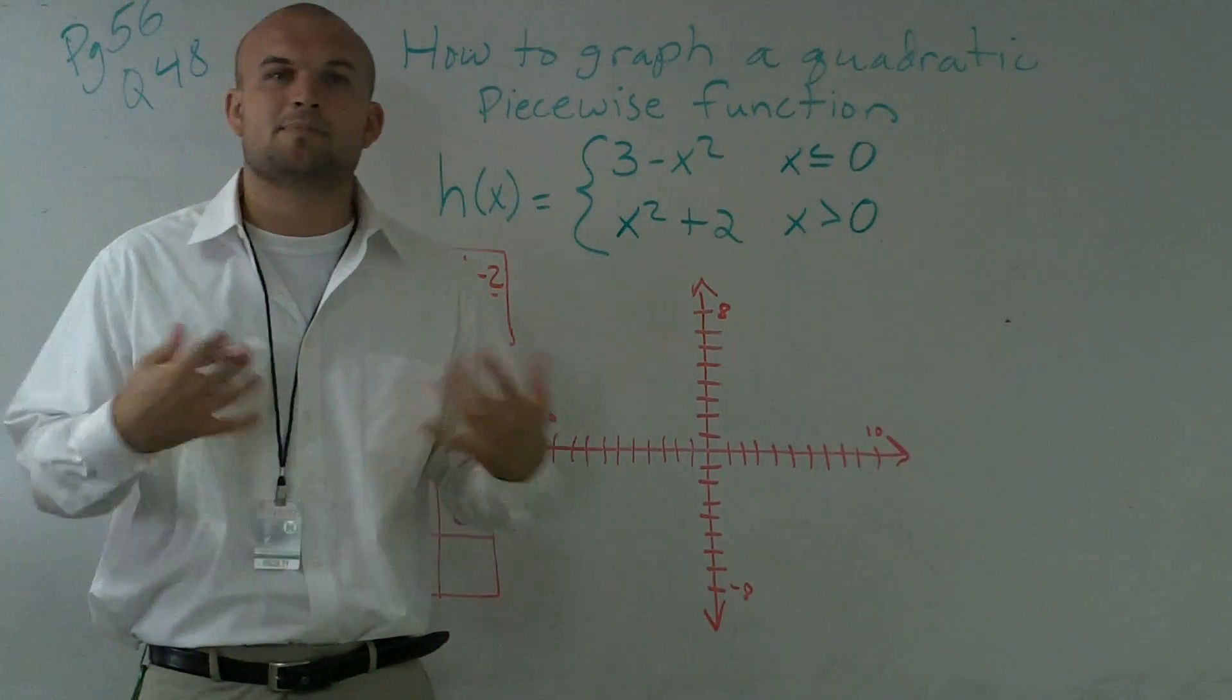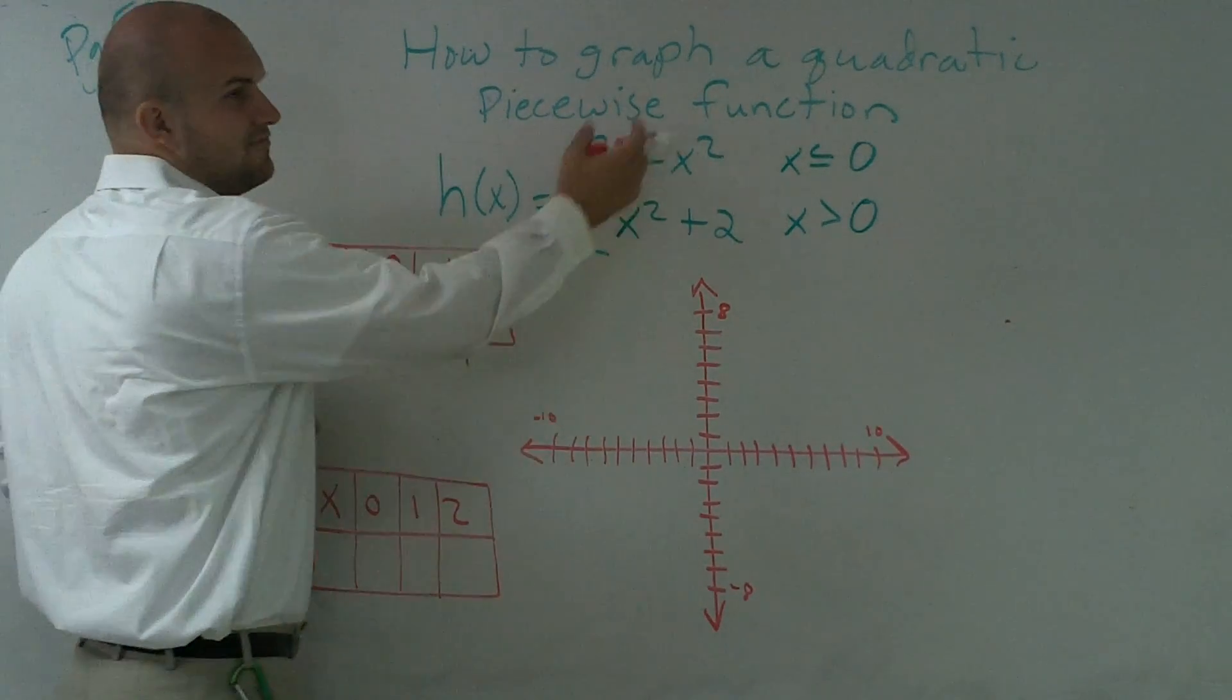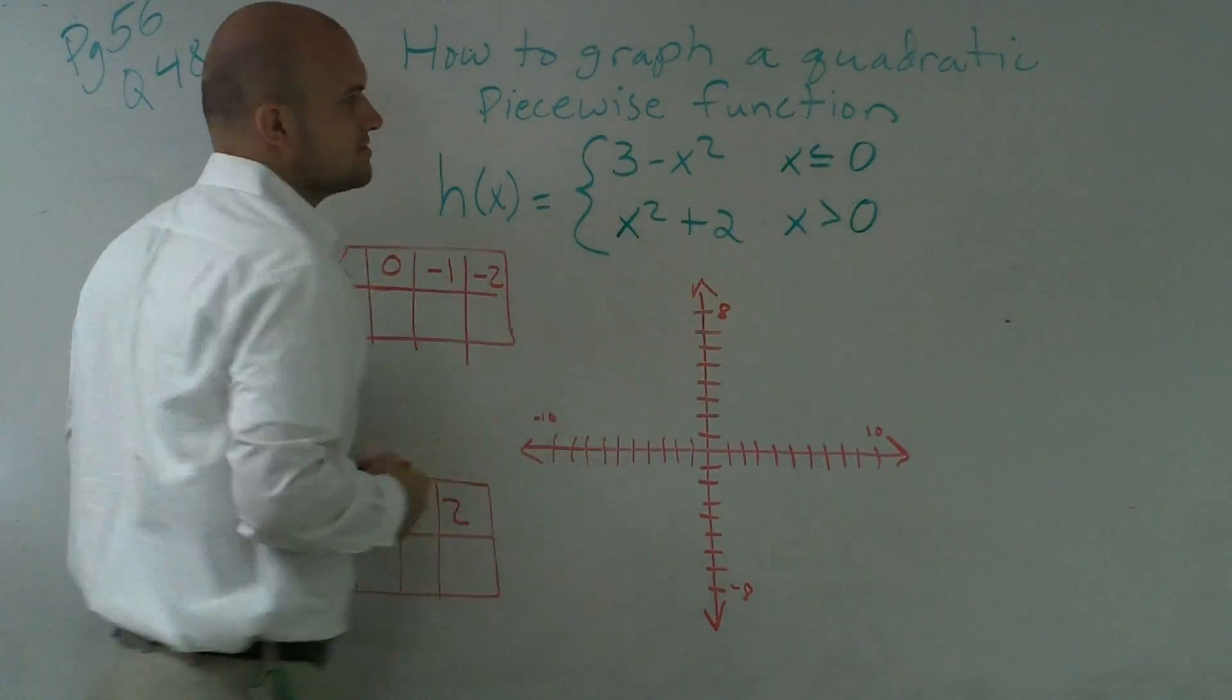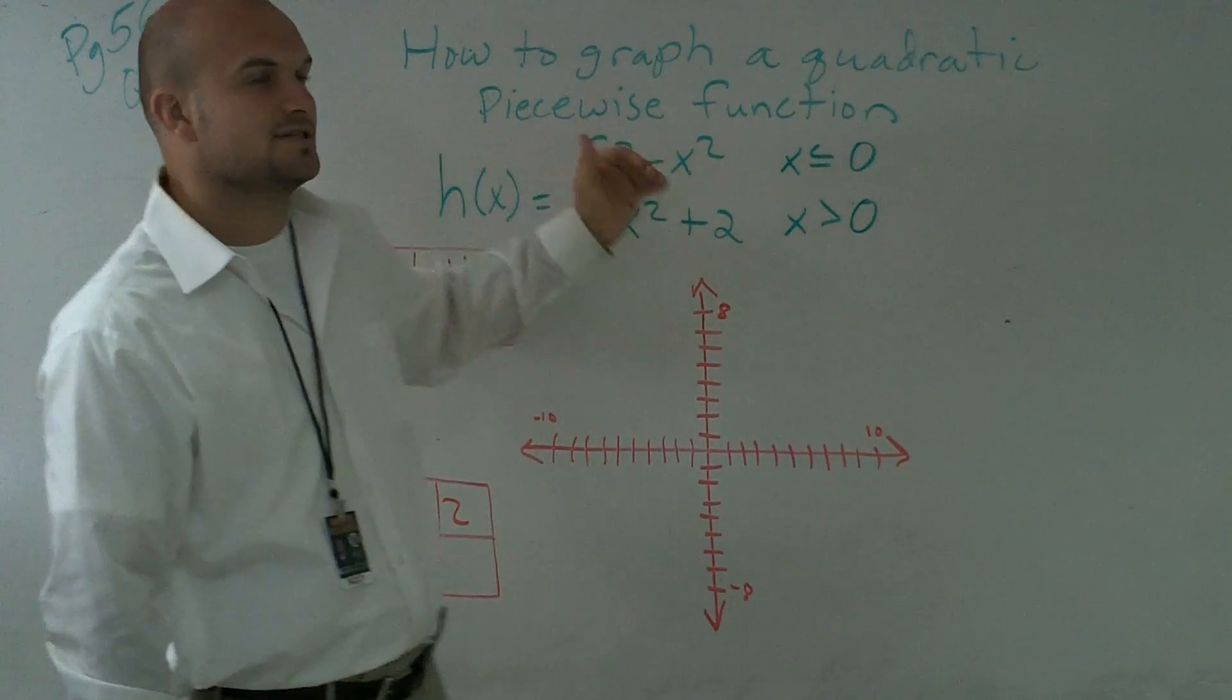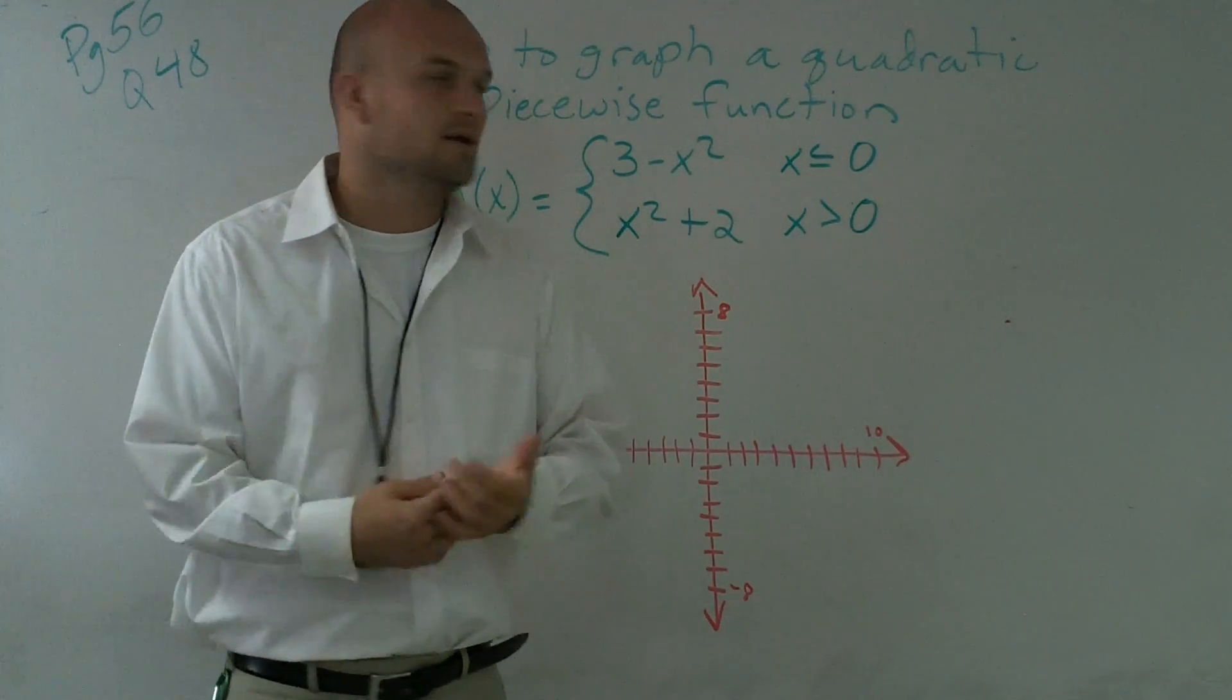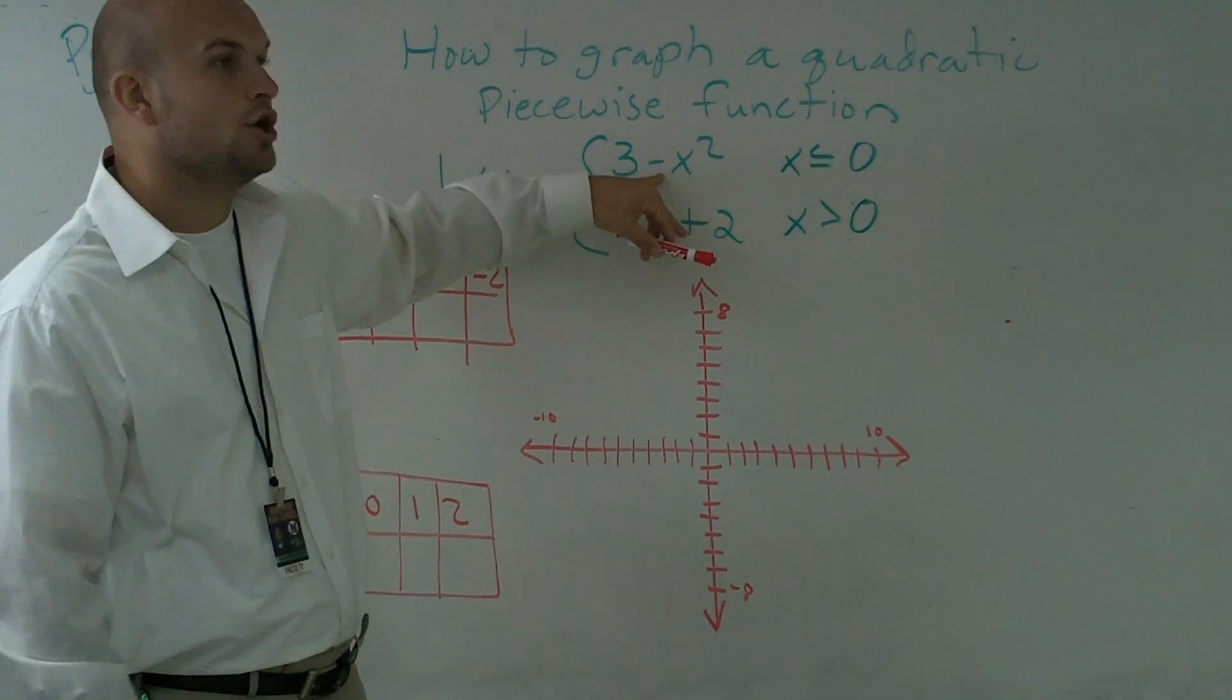The main important thing I want you guys to remember about my piecewise function is it's a function when we have constraints. So if you guys look at this first function, 3 minus x squared, you guys would notice that this is going to produce a parabola. And it is going to be a parabola that's going to open downward.